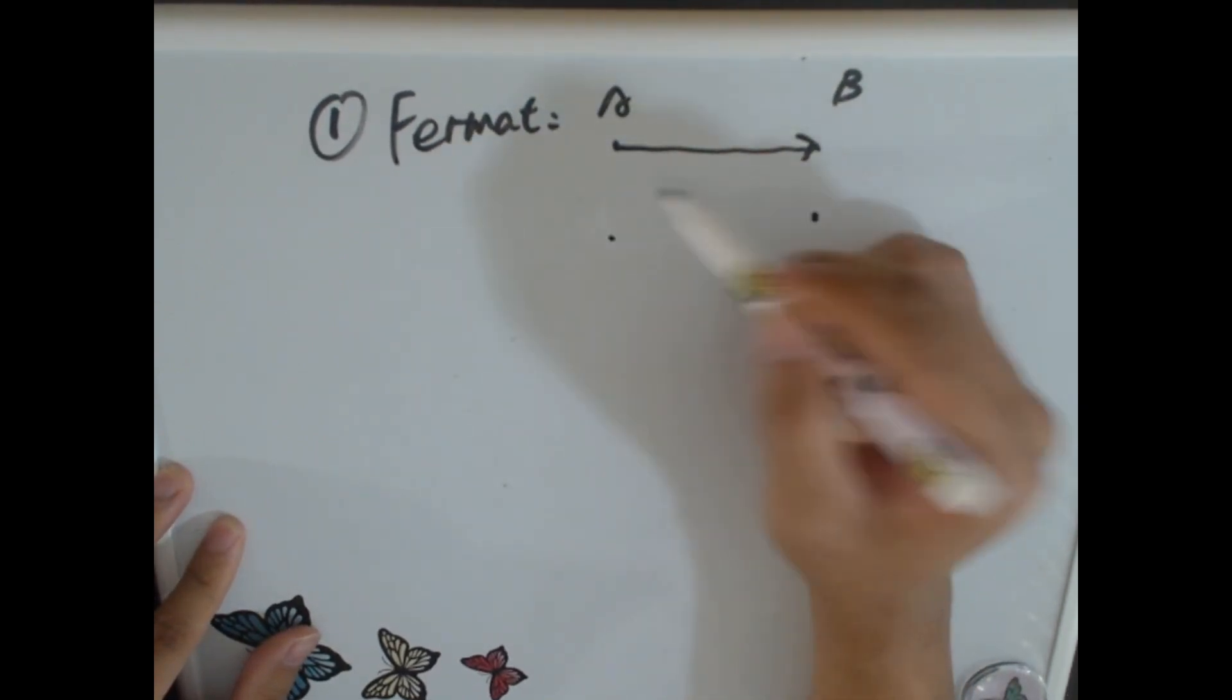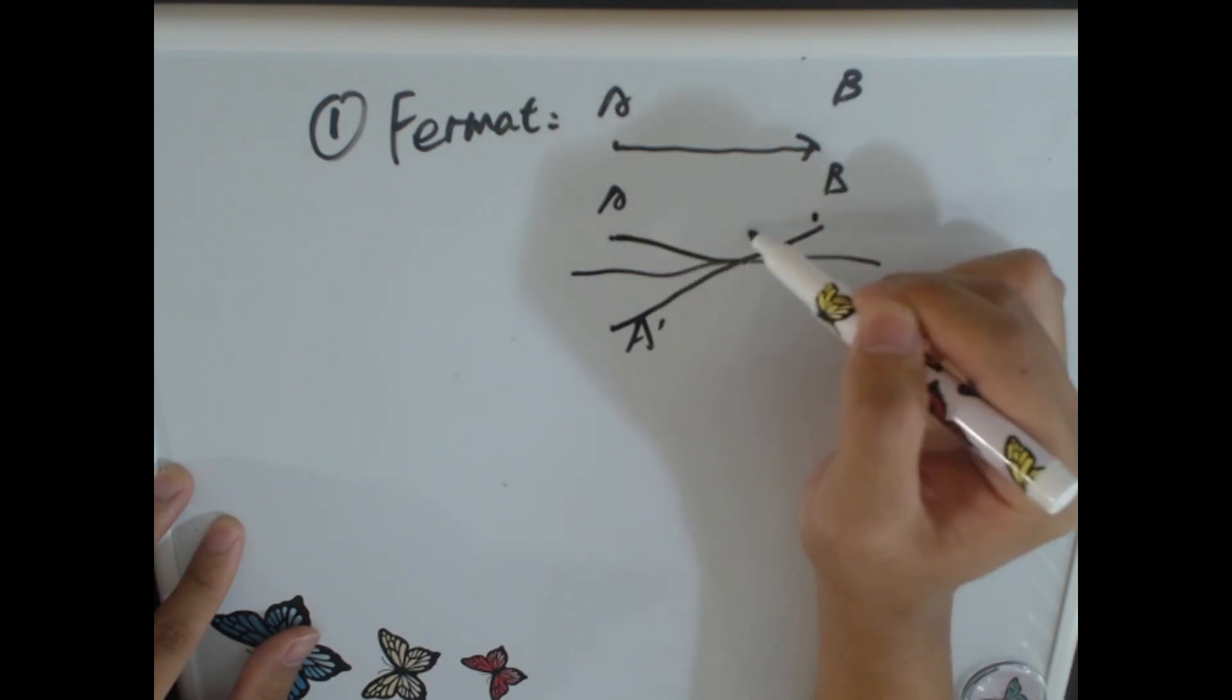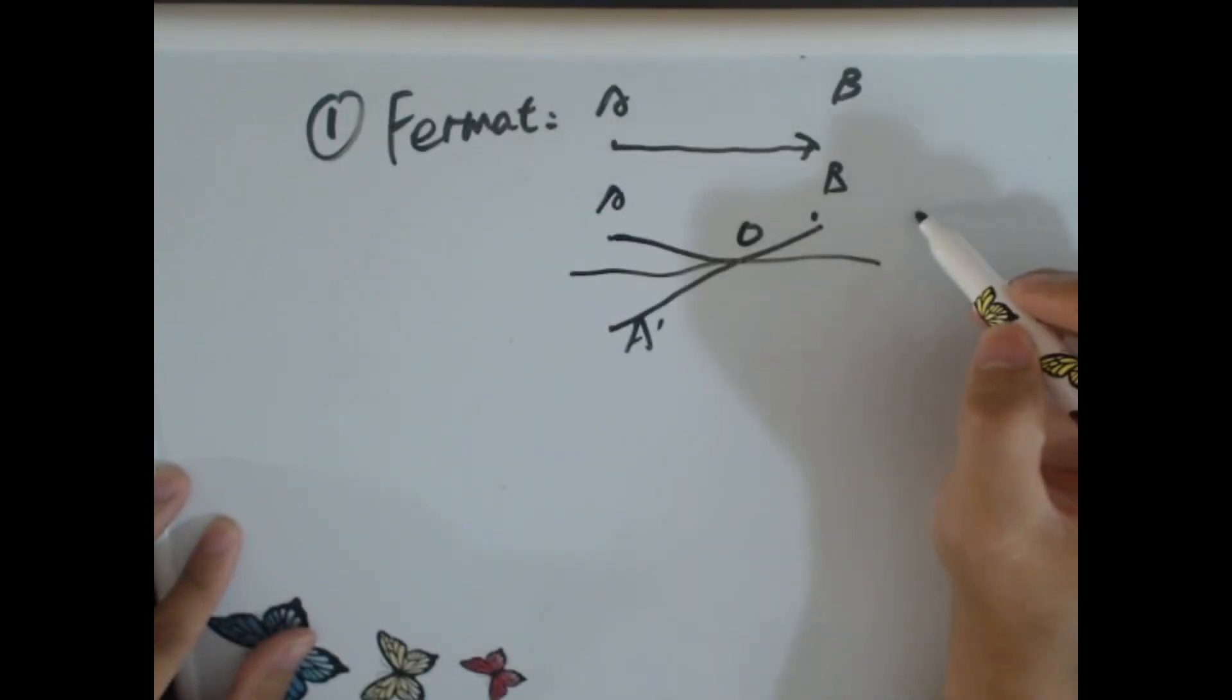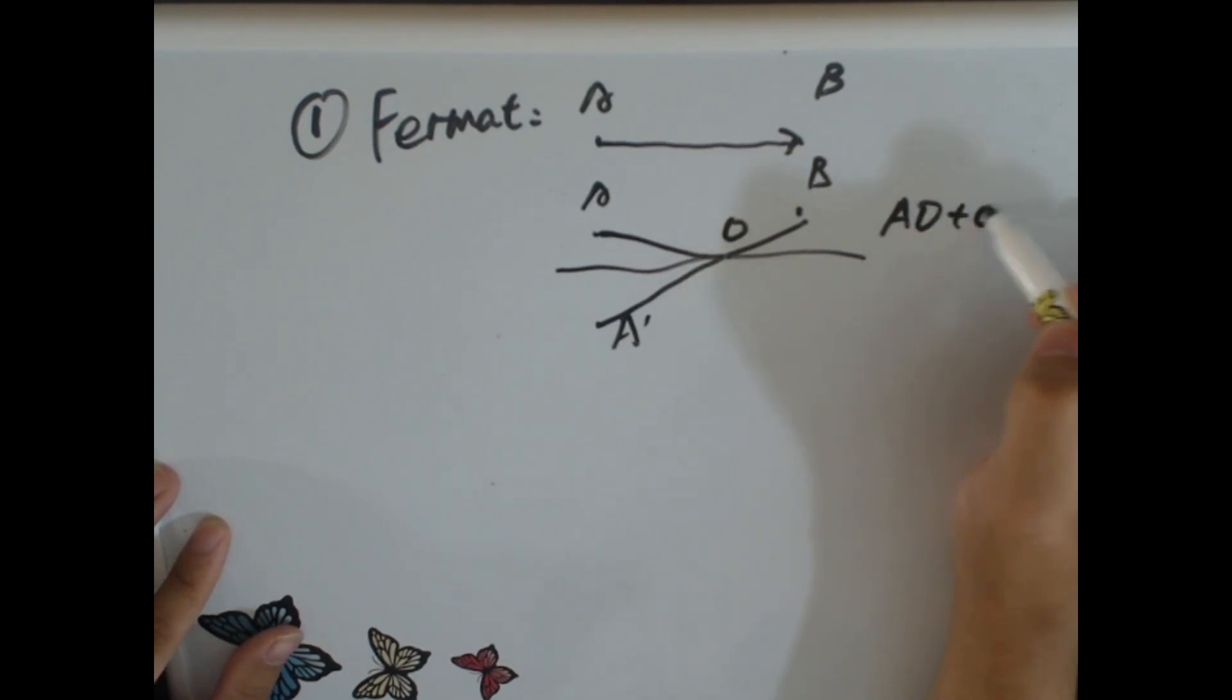And if it has to reflect, it will be something like you find a reflected point here and you connect these two and you find the intersect point where the shortest path is AO plus OB, right?